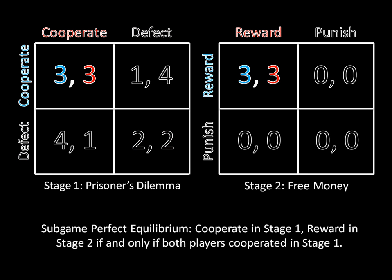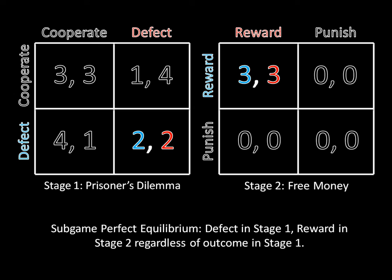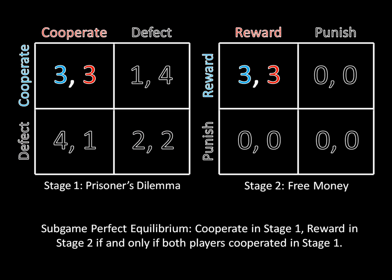And to see this — well, this is it. In this sub-game perfect equilibrium, you cooperate in stage 1, and you reward in stage 2 if and only if both players cooperated in stage 1. Now notice that in this equilibrium, we both cooperate in the first stage and both reward in the second stage. That gives us a payoff of 3 plus 3, which is 6 — which is strictly greater than the payoff in the other equilibrium, which was 2 plus 3 equals 5. So this equilibrium is strictly better than the equilibrium where we were disallowing that punishment strategy. However, it has to be the case that we're willing to punish in the second stage, otherwise this equilibrium falls apart.